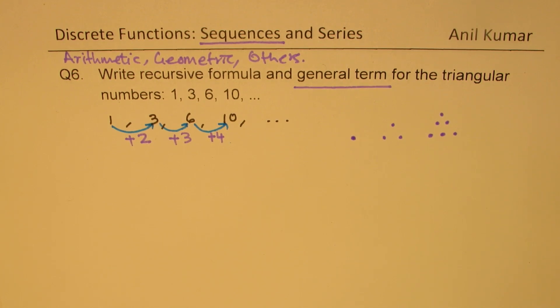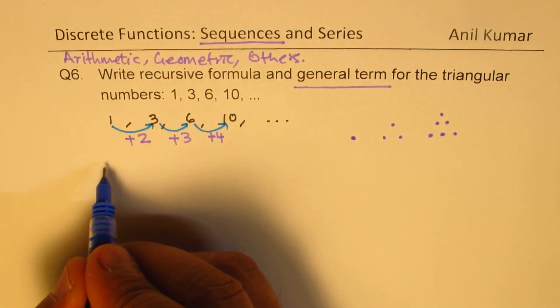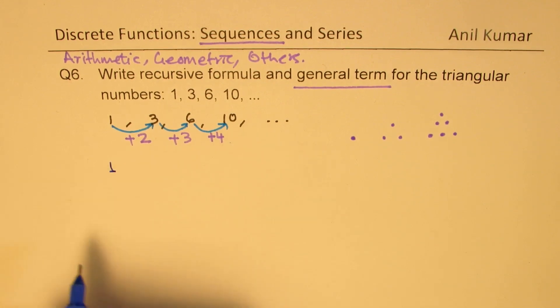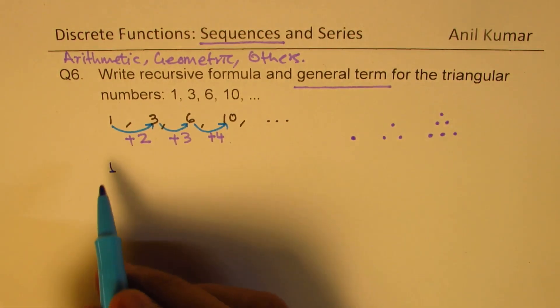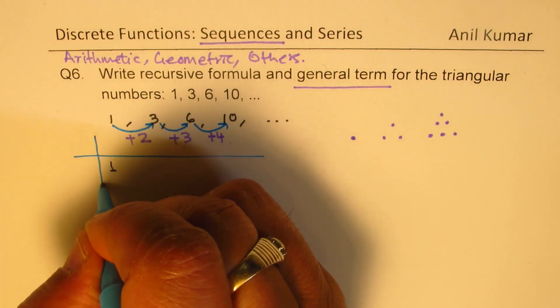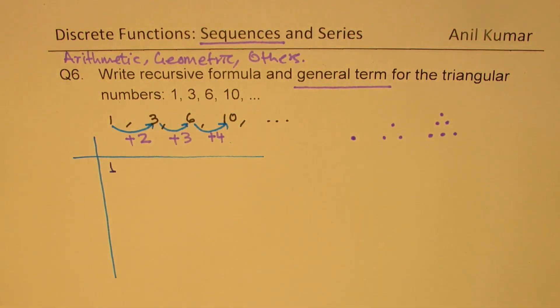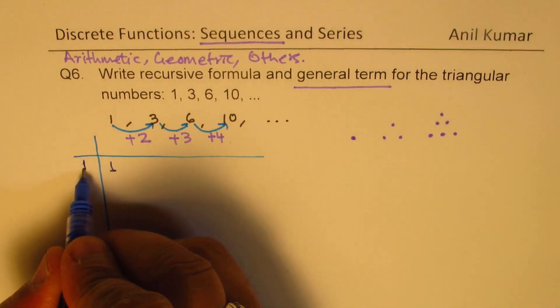So what is going to be the nth term? You can see that the number here which is three could be written as... The first number is one, so let me make a table to help this out and derive the formula. As far as the first term is concerned, it is 1.